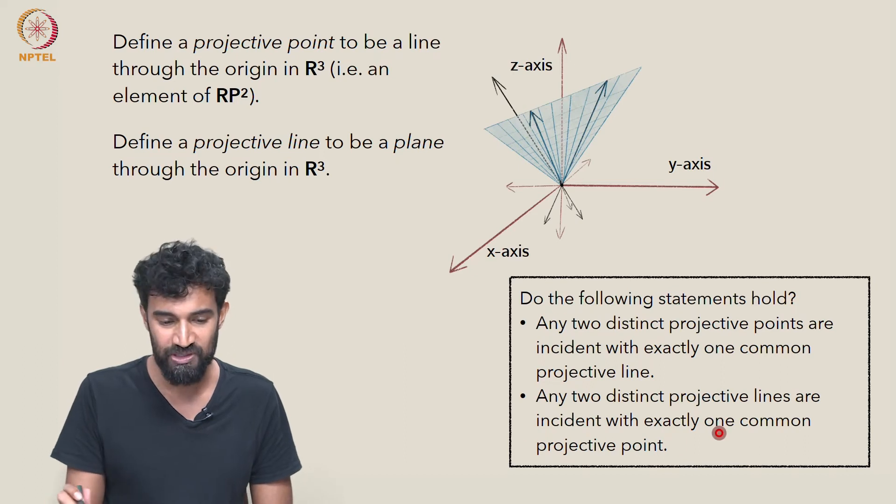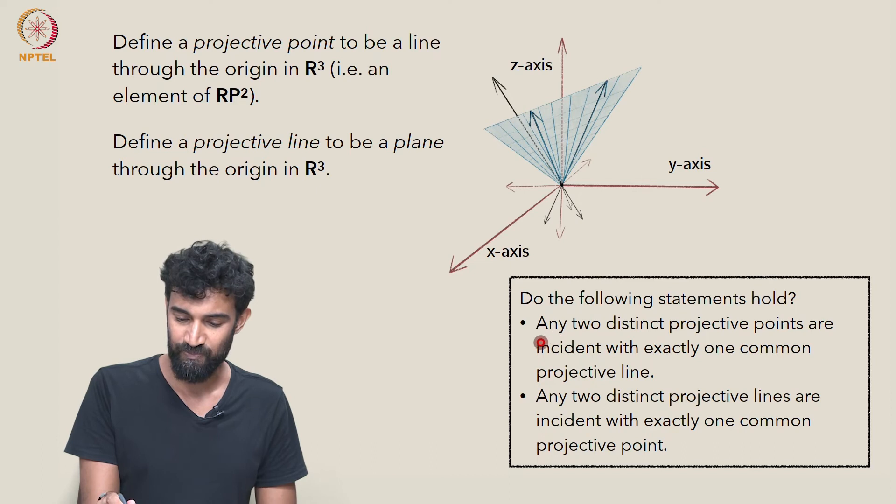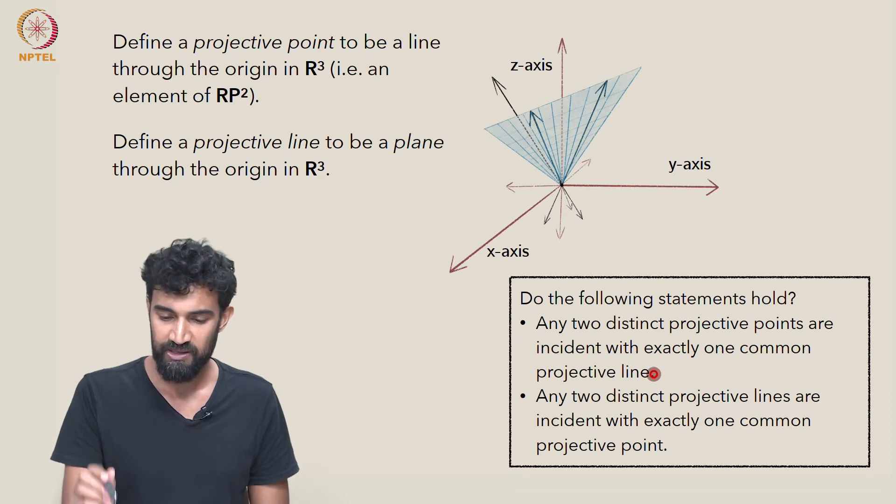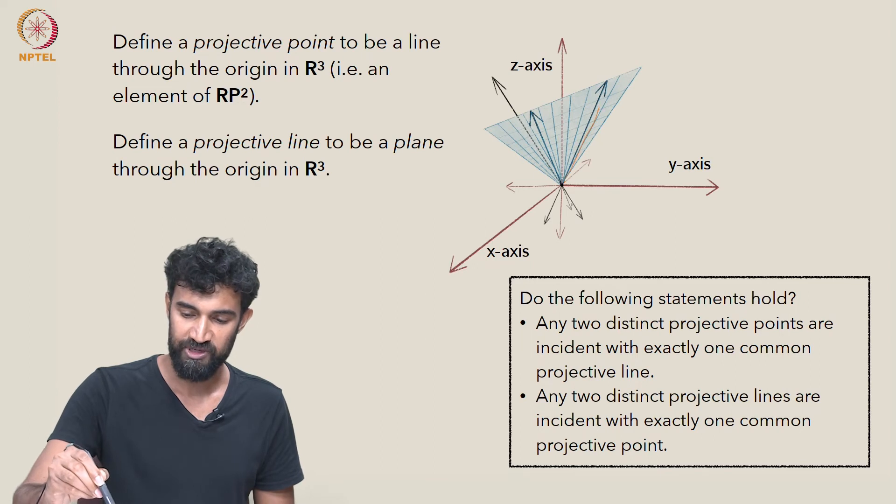So any two distinct projective points are incident with exactly one common projective line. Is that true? So here's a projective point here, just draw that a little more clearly.